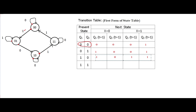For the last state 11, we again see only the tail ends. When x equals 0, it moves to 11; when x equals 1, it goes to 00. So when x equals 0 the next state is 11, and when x equals 1 the next state is 00. This completes the first form of state table or transition table.